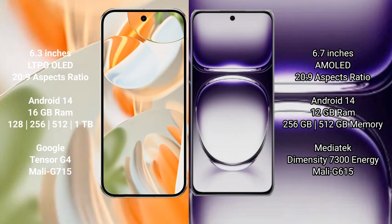The Google Pixel 9 Pro comes with 16GB RAM and 128GB, 256GB, 512GB, or 1TB internal storage options. It is powered by the Google Tensor G4 processor with an Immortalis G615 GPU.